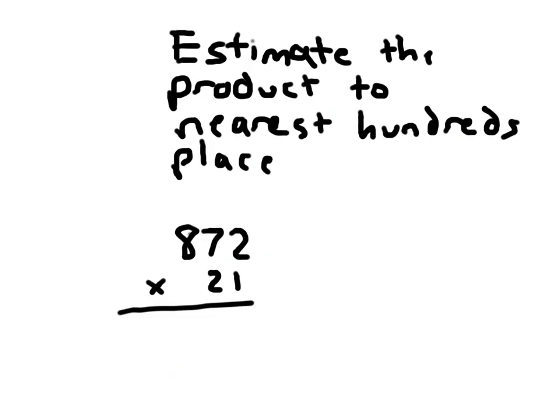Here, we're asked to estimate the product to the nearest 100's place. So I take the 872 and round it to the nearest 100's place. 872 nearest 100's place is 900. And again, what I do is I keep the other factor the same.